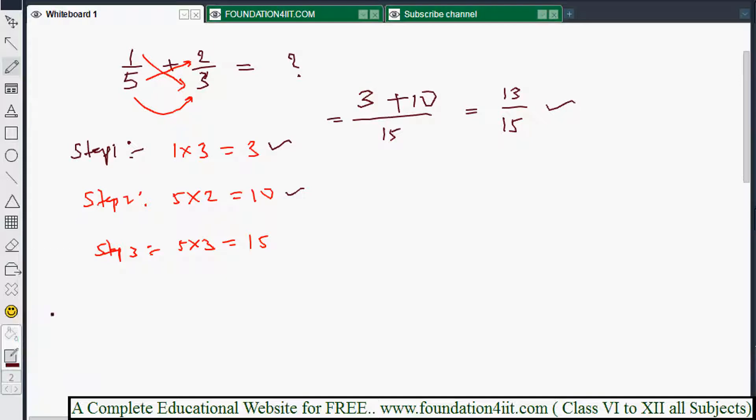See one more example. Cross method we can call this. If you take another example: 6 by 7 plus 3 by 4. Whenever the numbers are small it's an easy way instead of taking LCM. First 6 into 4 is 24. Next: 7 into 3 is 21. Last step is both denominators: 7 into 4 is 28. We can simplify the numerator: 24 plus 21 is 45 by 28.